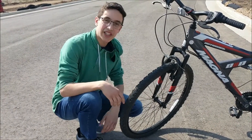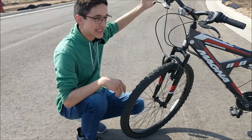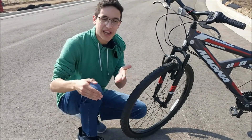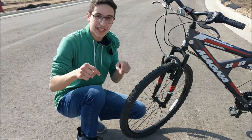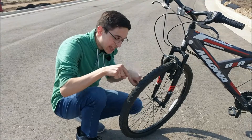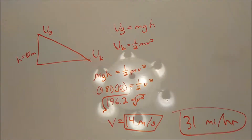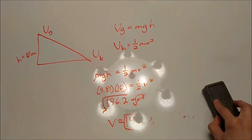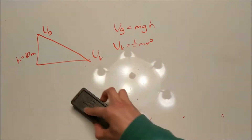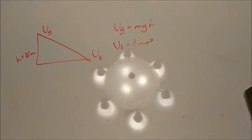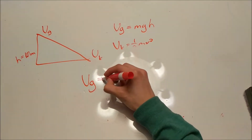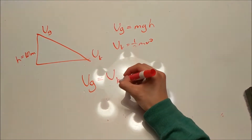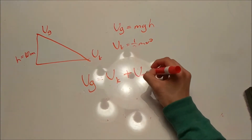This throws off our calculations. Now the potential energy at the top of the hill is not equal to our kinetic energy at the bottom. Instead, our potential energy at the top is equal to the kinetic energy at the bottom plus the thermal energy created by the bike. Friction now affects our equation: our gravitational potential energy equals our kinetic energy plus our thermal energy.